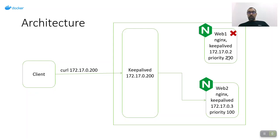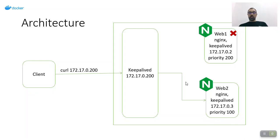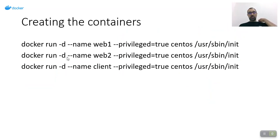In my scenario I used nginx because it's the simplest way to demonstrate the implementation, but you can use different kinds of implementations. You can even spread containers across multiple Docker hosts — using keepalived, if the whole Docker host is down and all containers are down, we can redirect traffic to another Docker host which has our secondary or standby containers.